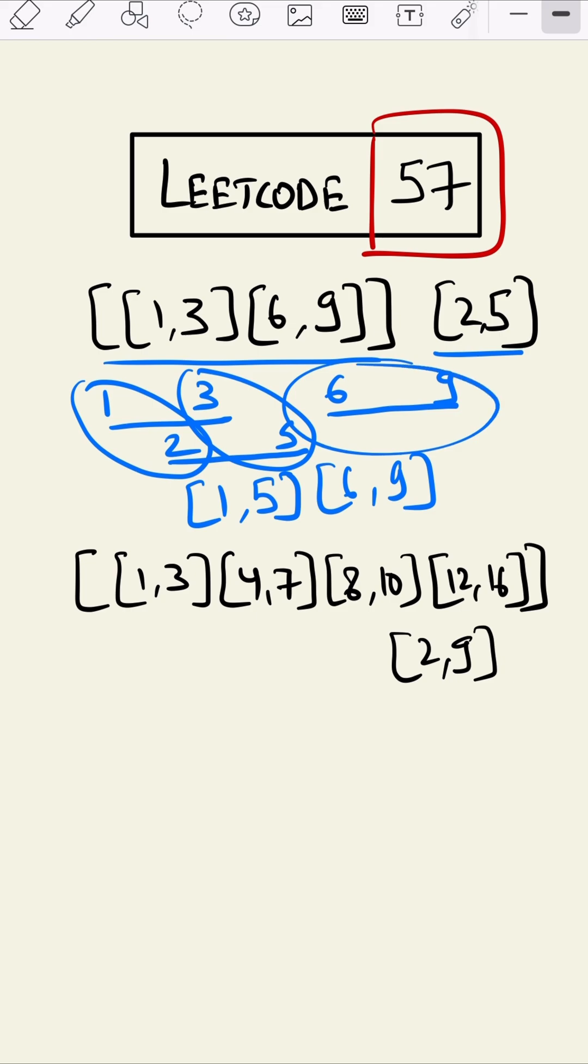Let us take one more example. Suppose this is our existing and this is what we have to add. Let's draw a number line: 1 to 3, 4 to 7, 8 to 10, and 12 to 16 here, and 2 to 9 will come somewhere around here, 2 and 9.